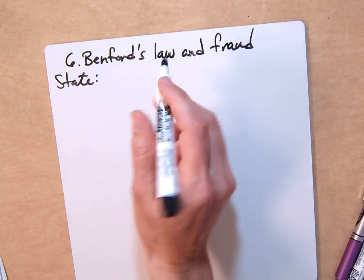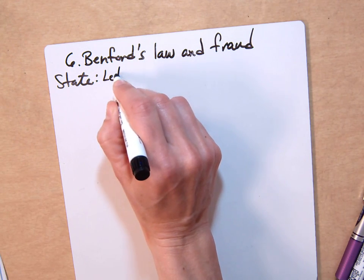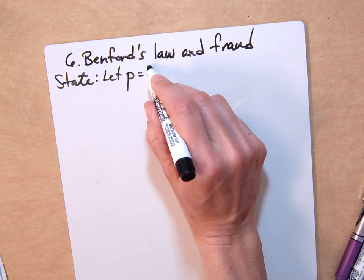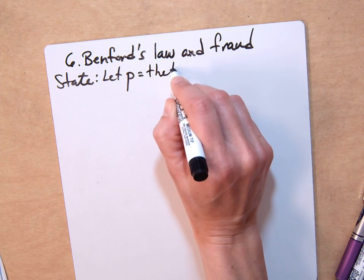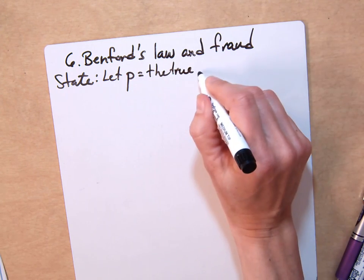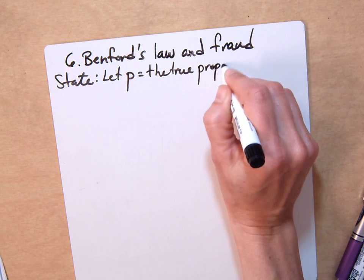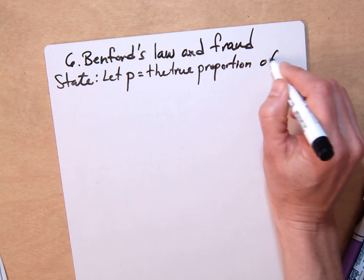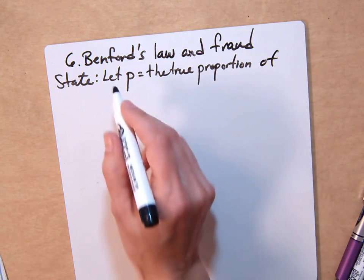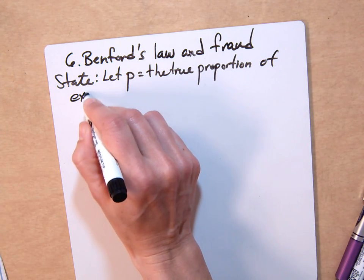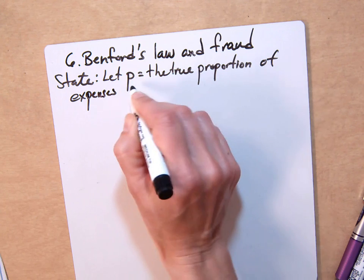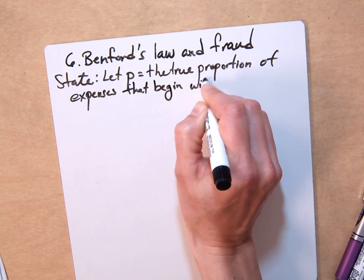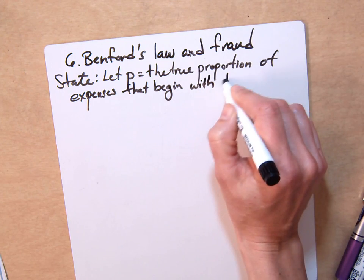We have to define what our proportion means. Let P equal the true proportion of expenses that begin with digit 1.